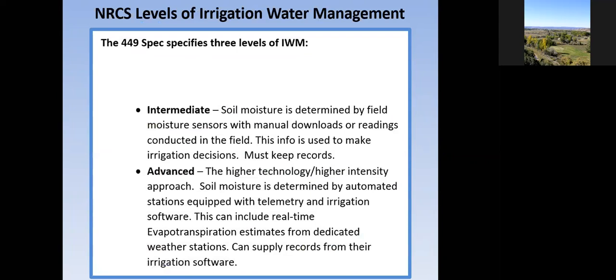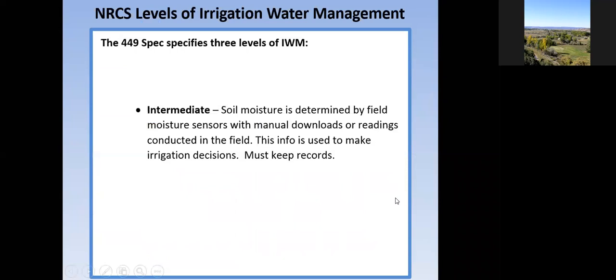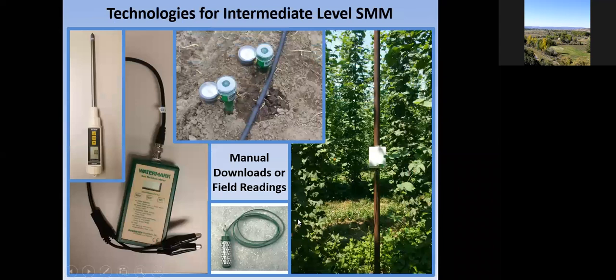The second level is intermediate. In this scenario you're using field moisture sensors with manual downloads or readings conducted in the field. Here are some examples of what these field soil moisture sensors look like.